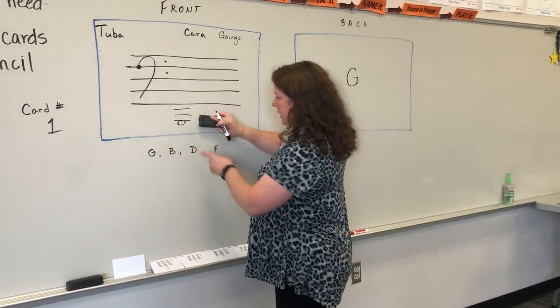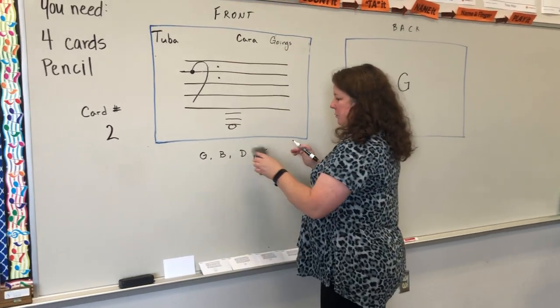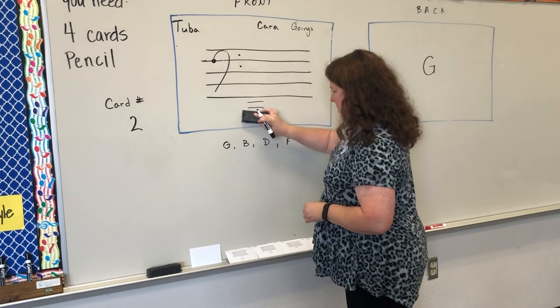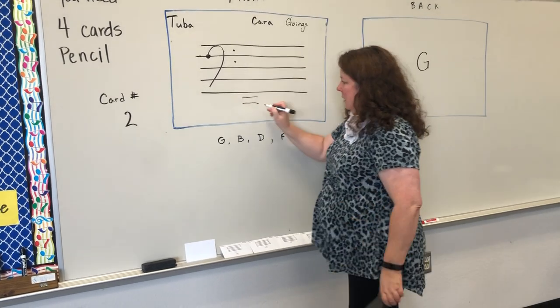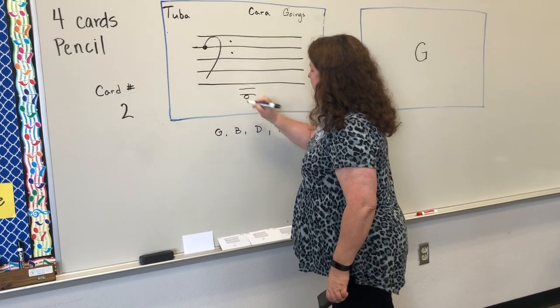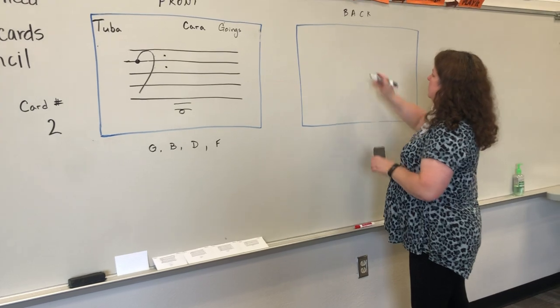Then we're going to get rid of, on the front side, we're going to do card number two. Card number two, we're going to need two ledger lines. And we're going to hang this just below that ledger line. This is the note B.